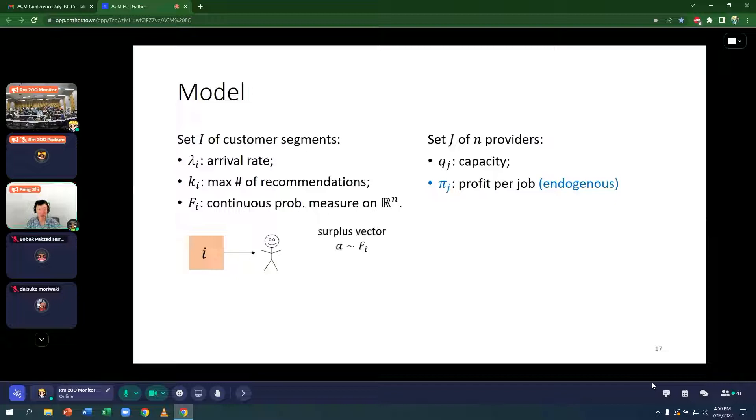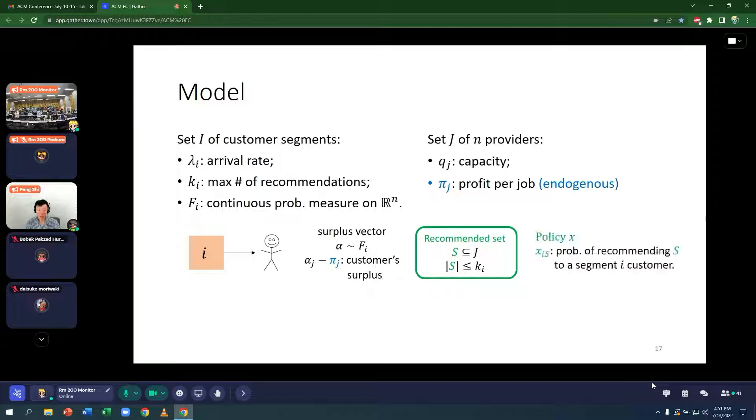So when a new customer of segment I arrives, she has a surplus vector alpha, which is drawn according to this distribution F. This is an N dimensional vector where the J component denotes the customer's surplus with matching with provider J. The provider's share of the surplus is the profit pi_j. So the customer's share is alpha_j minus pi_j. Each customer sees a recommended set, a subset S of max cardinality K, say four remodelers. And the platform decides on the policy, which specifies the probability of recommending each subset S to each segment I of customers.